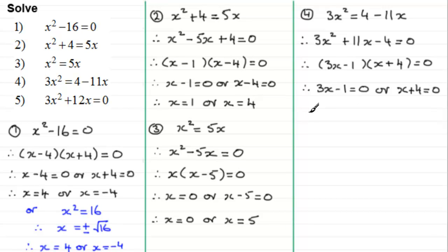And with this one, if we just go straight to the answer, if we add 1 to both sides we get 3x equals 1, and then divide by 3, we end up with x equaling one third. And in the second one, just subtract 4 from both sides, and you get x equals minus 4.